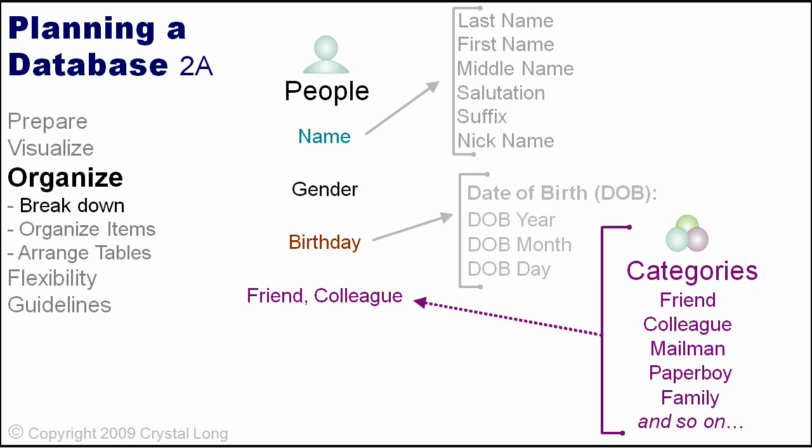Categories of people include: friend, colleague, family, mailman, paperboy, grocer, handyman, artist, musician, teacher.